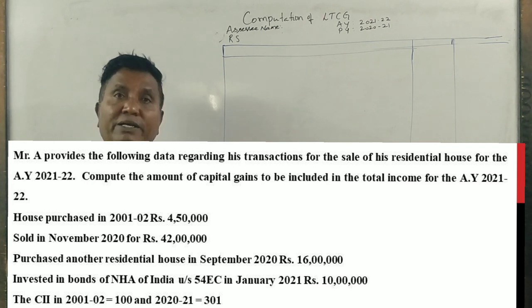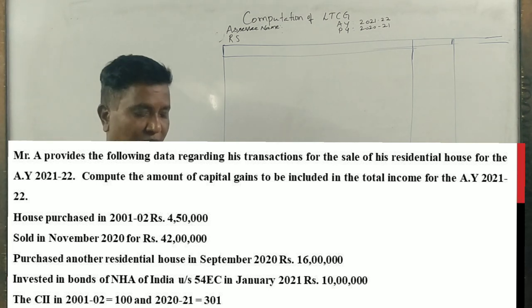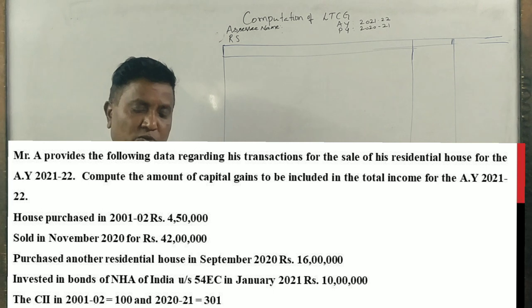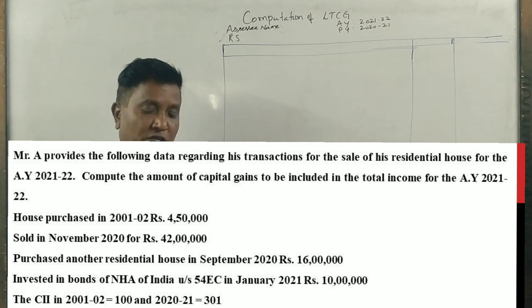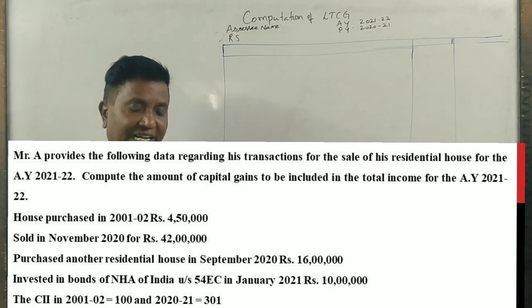House purchased in 2001-02 for Rs. 4,50,000, sold in November 2020 for Rs. 42 lakhs, purchased another residential house in September 2020 for Rs. 16 lakhs, invested in bonds of National Highway Authority of India under Section 54 EC in January 2021 Rs. 10,00,000.